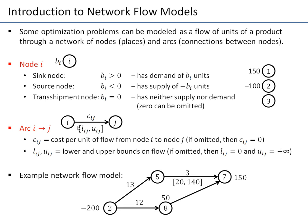We may also have lower and upper bounds on flows, meaning the minimum amount we have to ship and the maximum we are allowed to ship on a connection. If bounds are omitted, the lower bound defaults to zero, but the upper bound defaults to infinity — meaning there is no upper bound effectively.